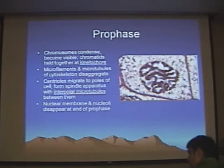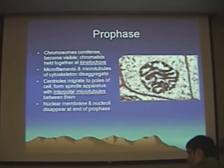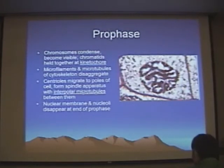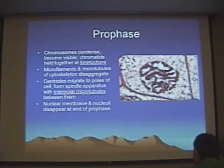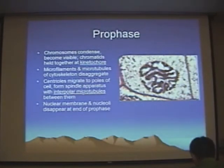During mitosis we have different phases: interphase, prophase, metaphase, anaphase, telophase. You should have that memorized if you don't already. Interphase is what the cell does when it's not replicating — inter means between, so interphase is between mitotic divisions. Prophase through telophase is the active synthetic replicatory part of cell division.